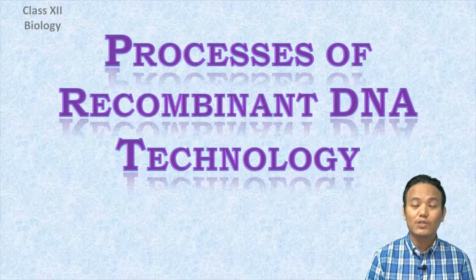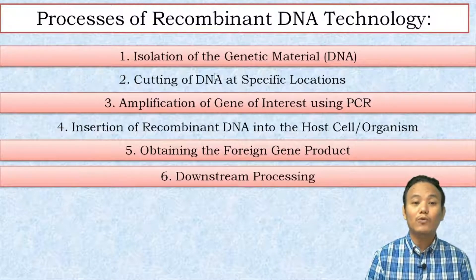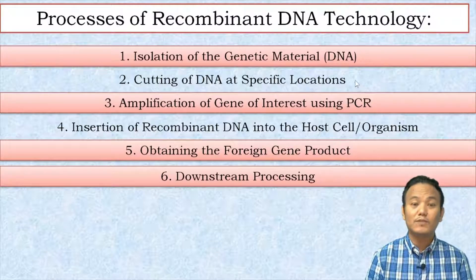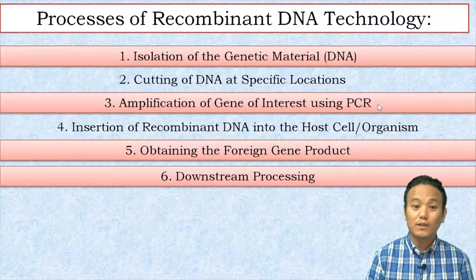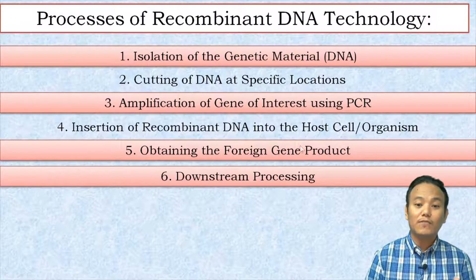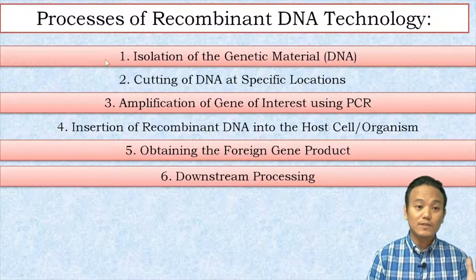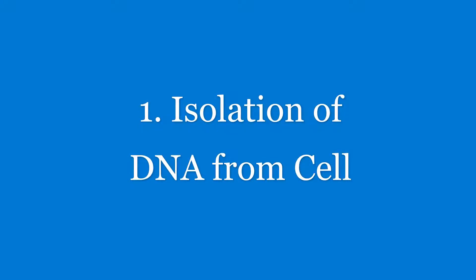So what are the processes of recombinant DNA technology? The first process is isolation of the genetic material or DNA from the cells. That is followed by cutting the DNA at specific locations using restriction endonucleases, then amplification of the gene of interest using PCR — polymerase chain reaction. The fourth step is insertion of recombinant DNA into the host cell, followed by obtaining the foreign gene product, and finally downstream processing.